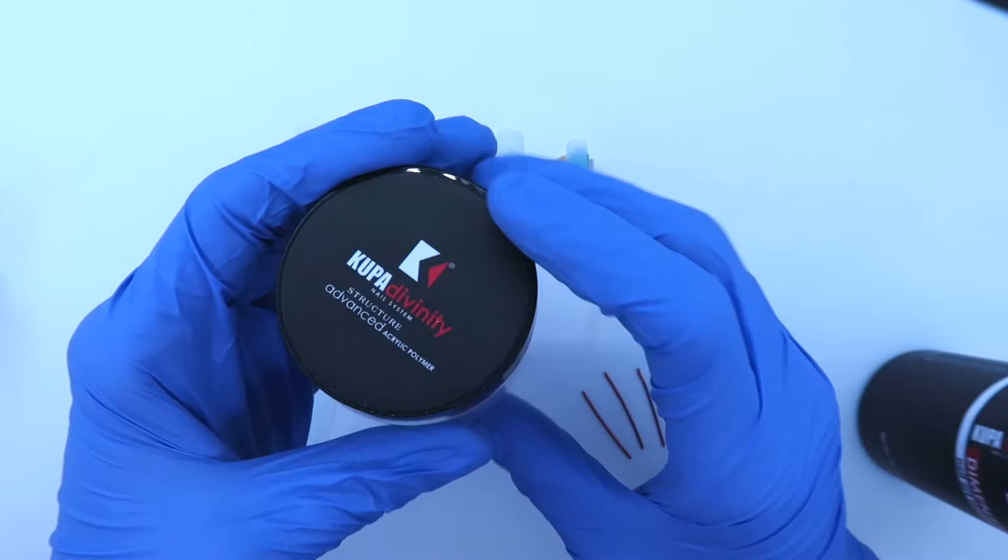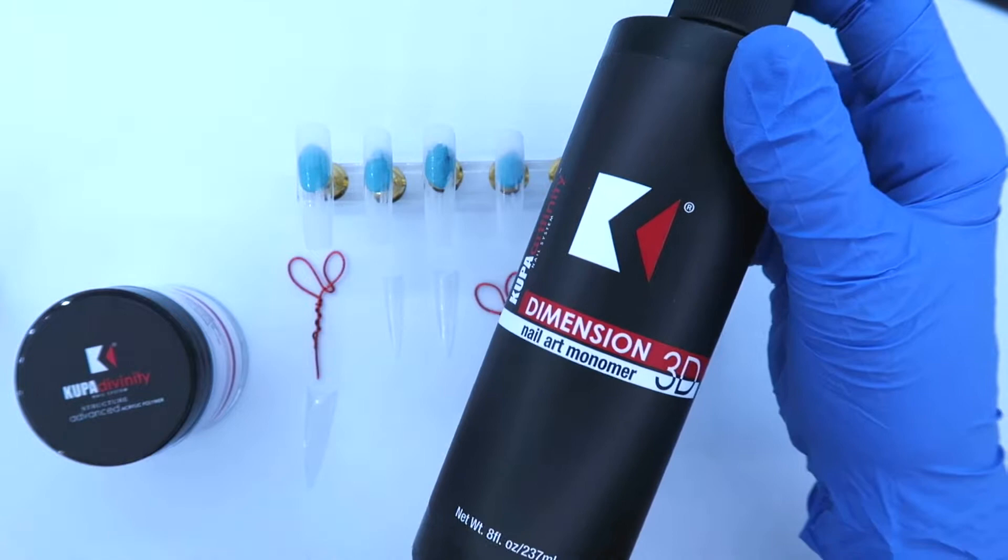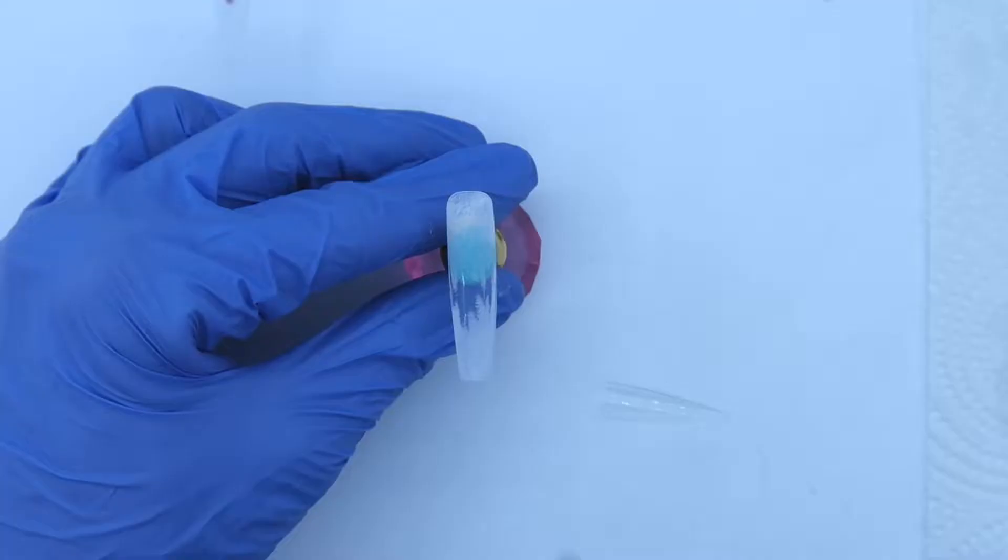For the thin coat of overlay, I used Koopa's Structure Acrylic and their 3D Nail Art Monomer. That monomer is perfect if you love your acrylic to set quickly, like I do.